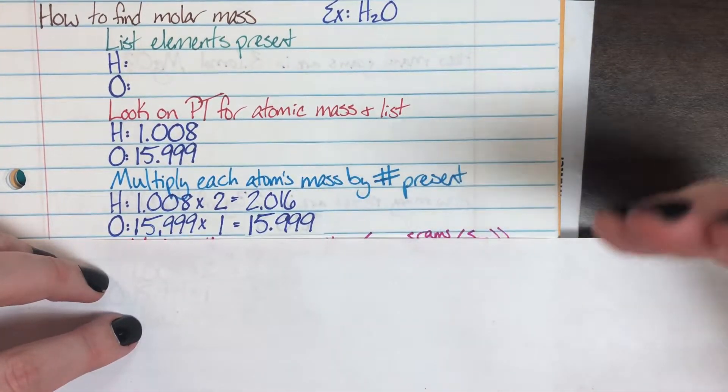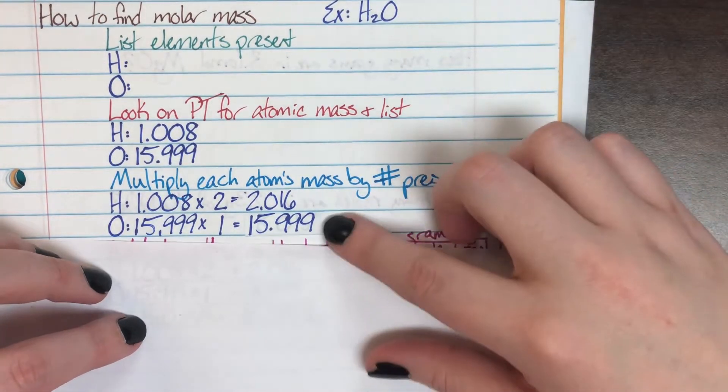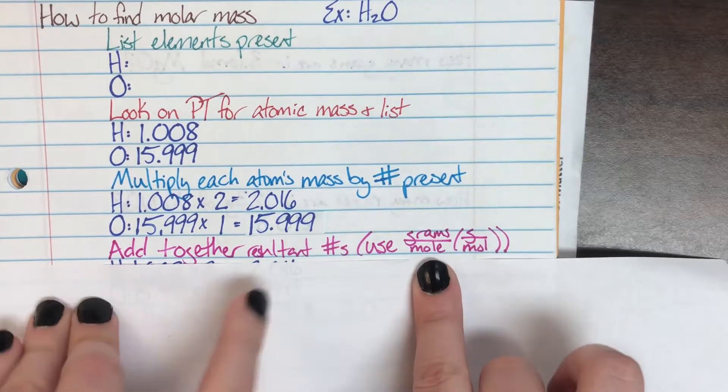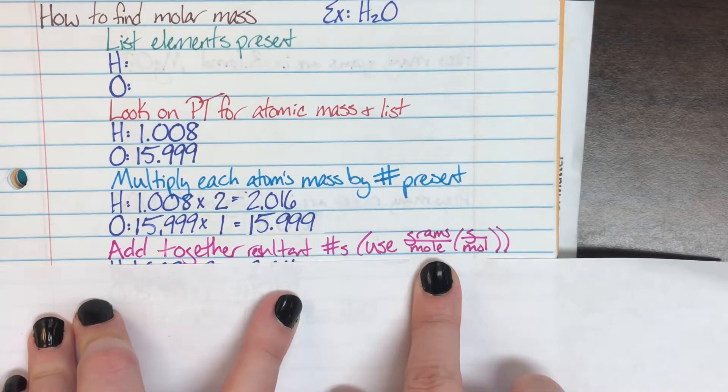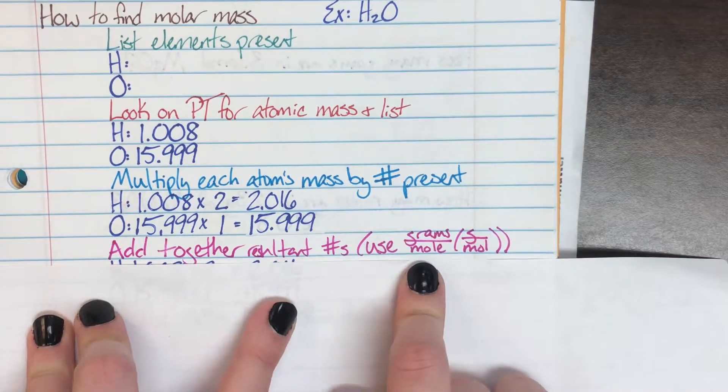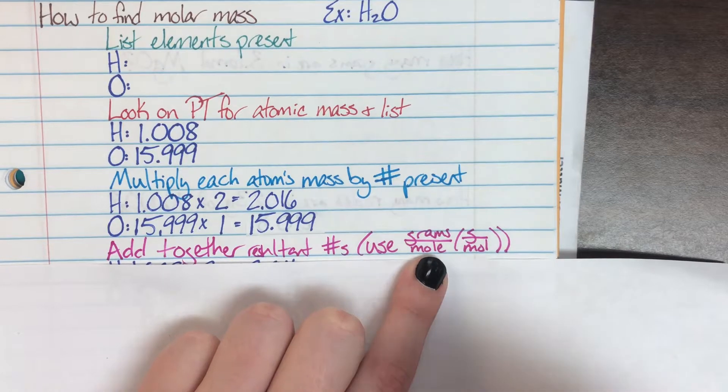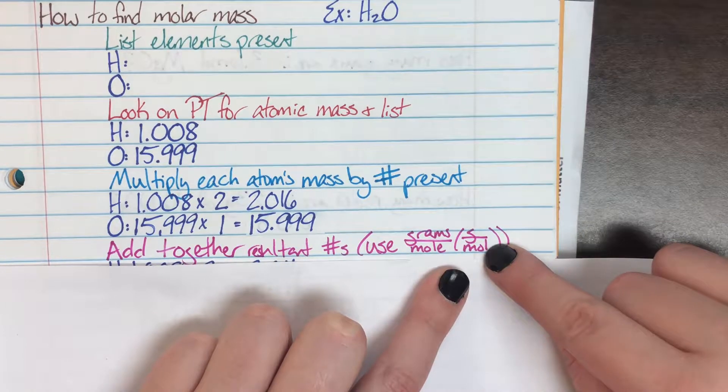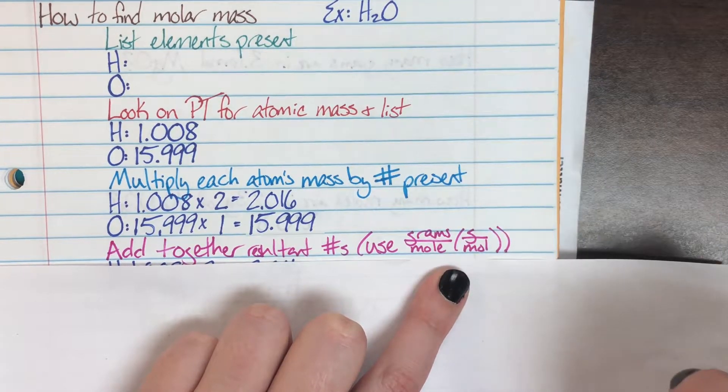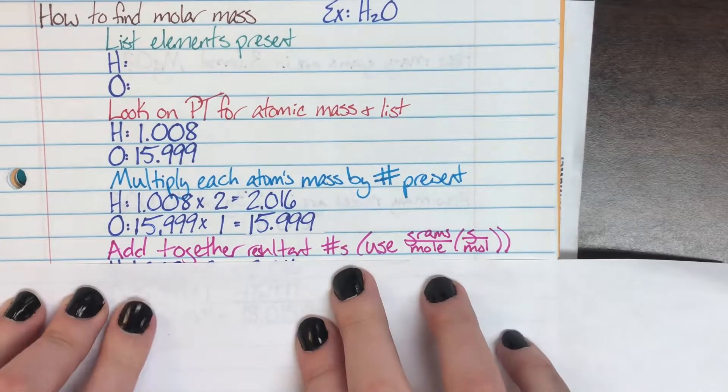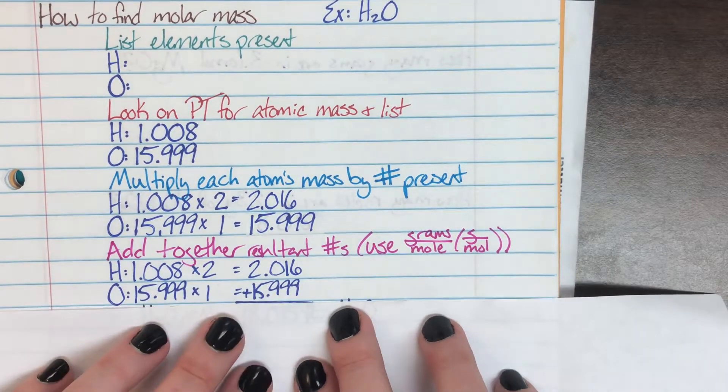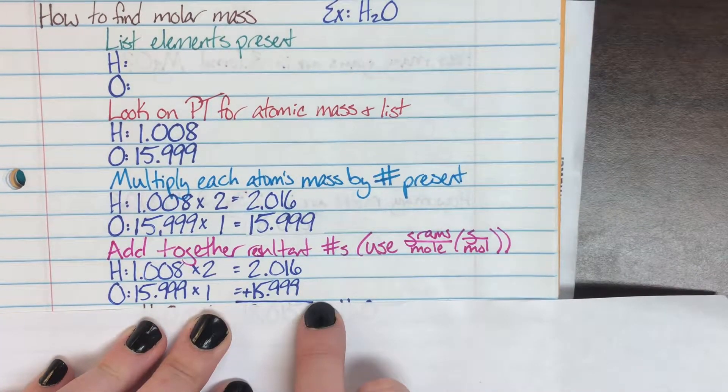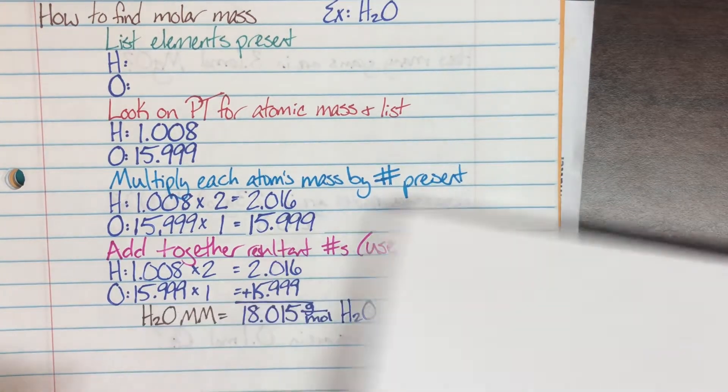Once I have each individual atom's total mass contributed written out, I'm going to go ahead and add those resultant numbers together, and I'm going to attach its appropriate unit. Molar mass's unit is grams per mole, and it could also be written shorthand. Remember, scientists are very lazy, so grams would be shortened to just G, and mole—we took off a whole letter and we just shortened it to M-O-L. When I did that, I just went ahead and rewrote everything, and I was lazy again, and all I did was I just added a plus sign and I drew a line showing that I was going to be doing math, and then I just added those together.